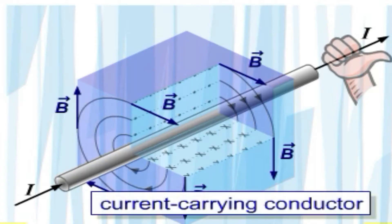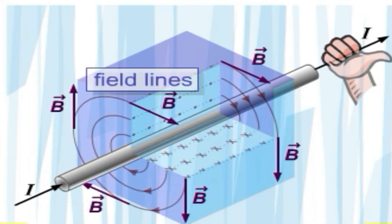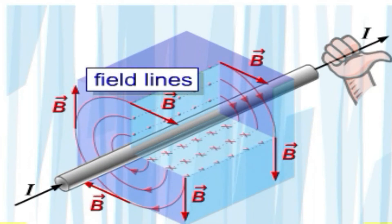If we hold a current carrying conductor in our right hand in such a way that the thumb points in the direction in which the current is flowing through the conductor, the four bent fingers show the direction of the lines of magnetic field forces around the conductor.